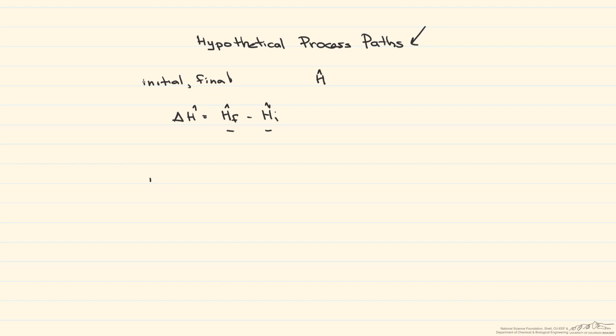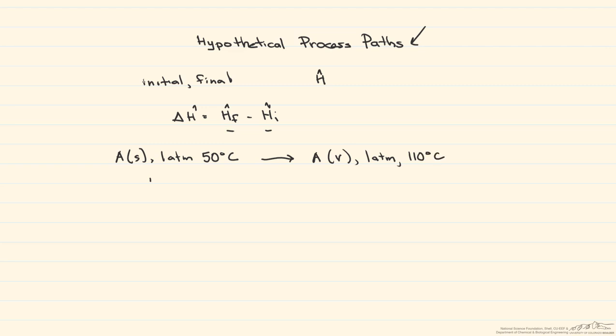Does that sound complicated? Yes, so let's look at an example. Let's say that we wanna find the change in enthalpy of some substance A, and it is a solid at one atmosphere and 50 degrees C — that's its initial state. And we wanna know the change in enthalpy for it becoming a vapor, still at one atmosphere, but now at 110 degrees C. Normally you just take this enthalpy and subtract from it this enthalpy, and there's your delta H. However, what if we don't have either of those enthalpies? So what we do is we construct a hypothetical path where we do know the values and then add them all up.